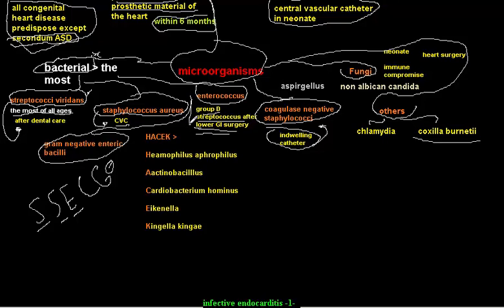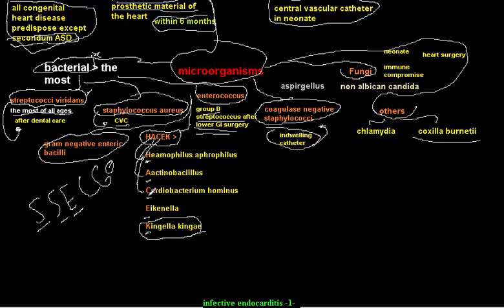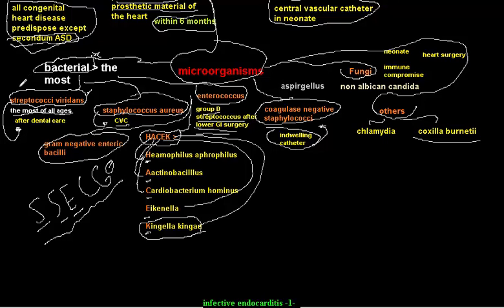There is a rare group of causes called the HACEK group: H for Haemophilus aphrophilus, A for Actinobacillus, C for Cardiobacterium hominis, E for Eikenella, and K for Kingella kingae. Just remember that Streptococcus viridans is the most important, followed by Staphylococcus aureus, and then the others.